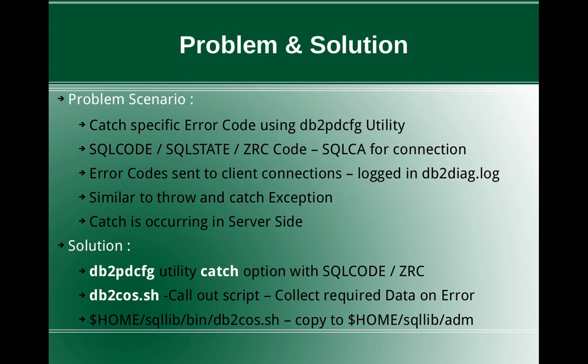There is a simplified way — like throwing and catching an exception, it should be as simple as that. The solution is to use the db2pd cfg utility with the catch option, where you can configure it to catch based on some SQL code, ZRC code, or even the diag message string. Many options are available, and for detailed information you can refer to the DB2 Knowledge Center.